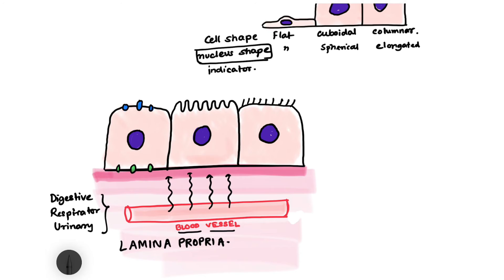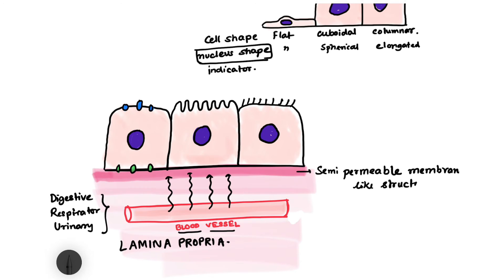At the junction between the lamina propria and the epithelial tissue, there is a condensation of the lamina propria that forms a semi-permeable membrane-like structure — not exactly a membrane, but membrane-like. This semi-permeable membrane-like structure is known as the basement membrane.